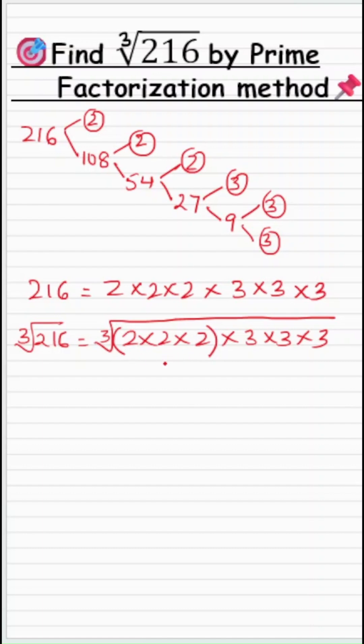So one triple of 2s and one triple of 3s. For each triple or group, I am going to write one number. For the 2s triple I write 2, and for the 3s triple I write 3. So cube root of 216 equals 2 times 3, which is 6. That's all.